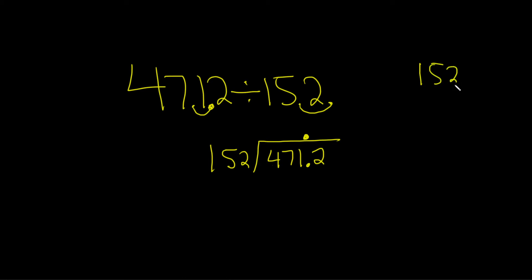152 times 3. Let's see what that is. 3 times 2 is 6. 3 times 5 is 15. Then you carry the 1. 3 times 1 is 3, plus 1 is 4. Yep. 456. So it goes in three times. So you put the 3 right above the 1. Then you do 3 times 152, which gives you 456. Then you draw a line, and you subtract.